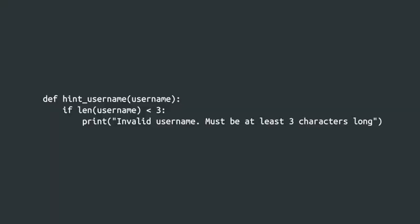To do that, you could write a function like this. This function checks whether the length of the username is smaller than three. If it is, the function prints a message saying that the username is invalid. Look closely at how the if statement is written. We write the keyword if, followed by the condition that we want to check for, and then followed by a colon. After that comes the body of the if block, which is indented further to the right.